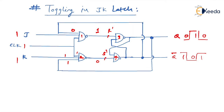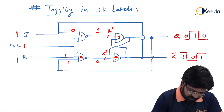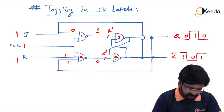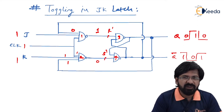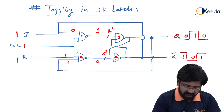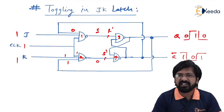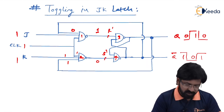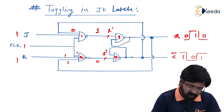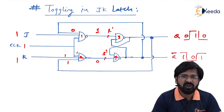So what exactly is meant by race around condition? In summary, when J=1 and K=1, Q and Q_bar will keep toggling until the clock becomes 0 again. Till the time clock equals 1, Q and Q_bar keep complementing themselves.